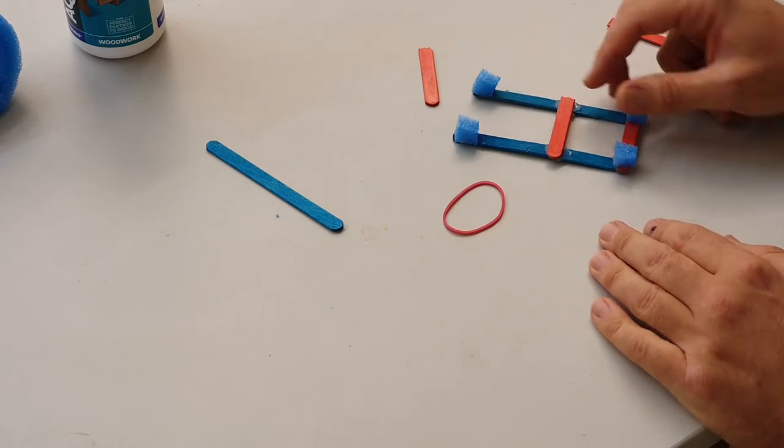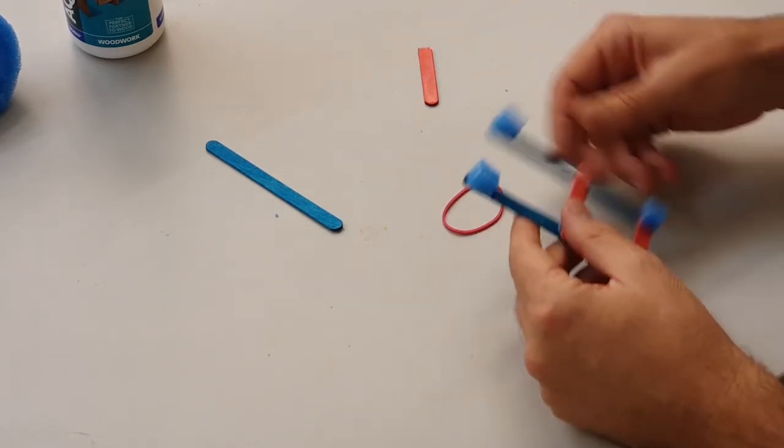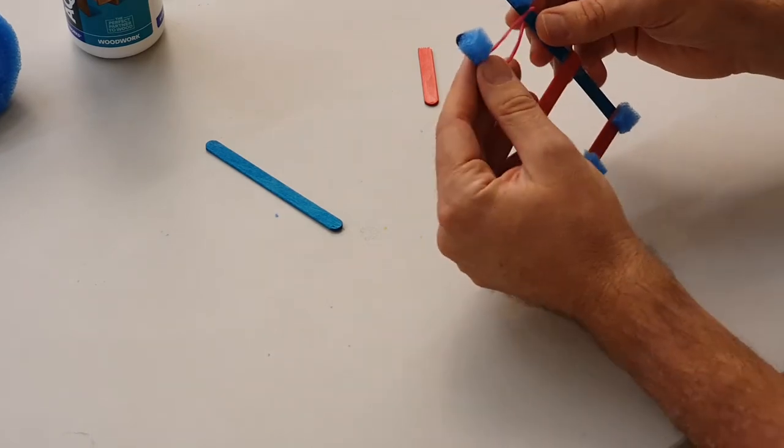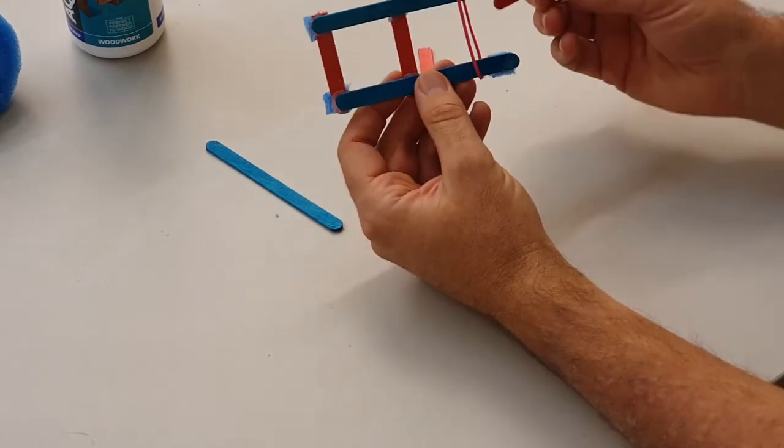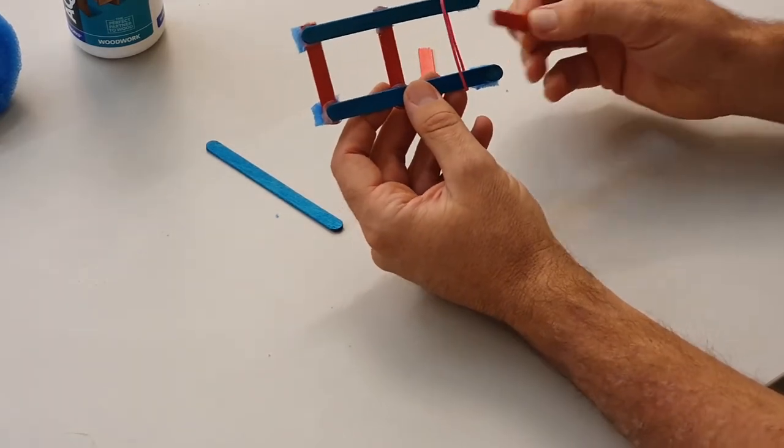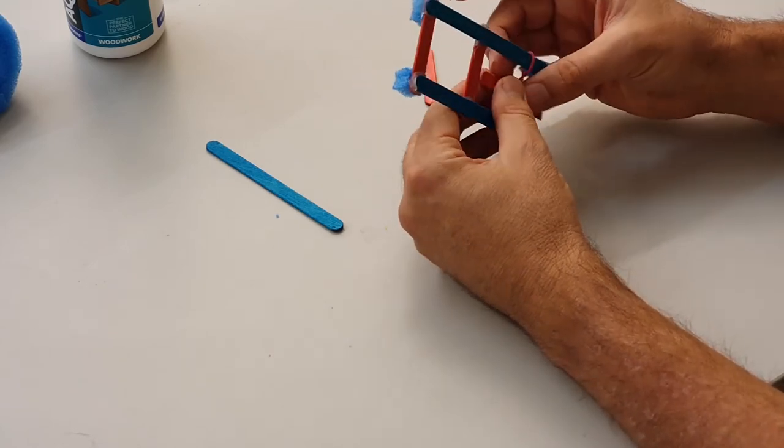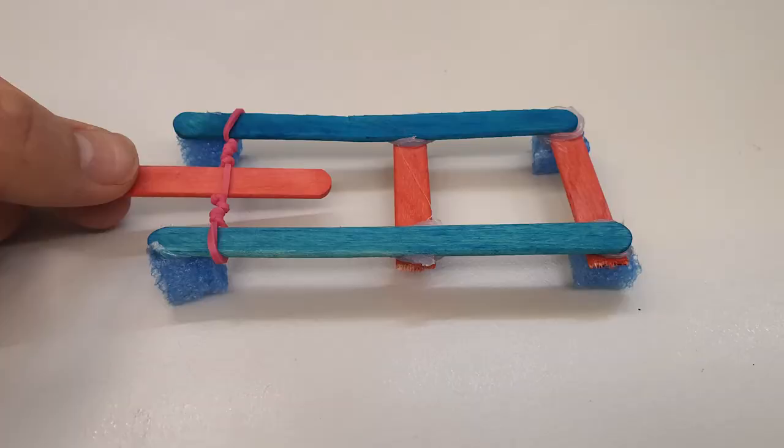Now with the rubber band, we're going to put it over this section here. So it's simply a matter of putting it over like that, and getting our propeller, winding it up, and that is all wound up ready to go.